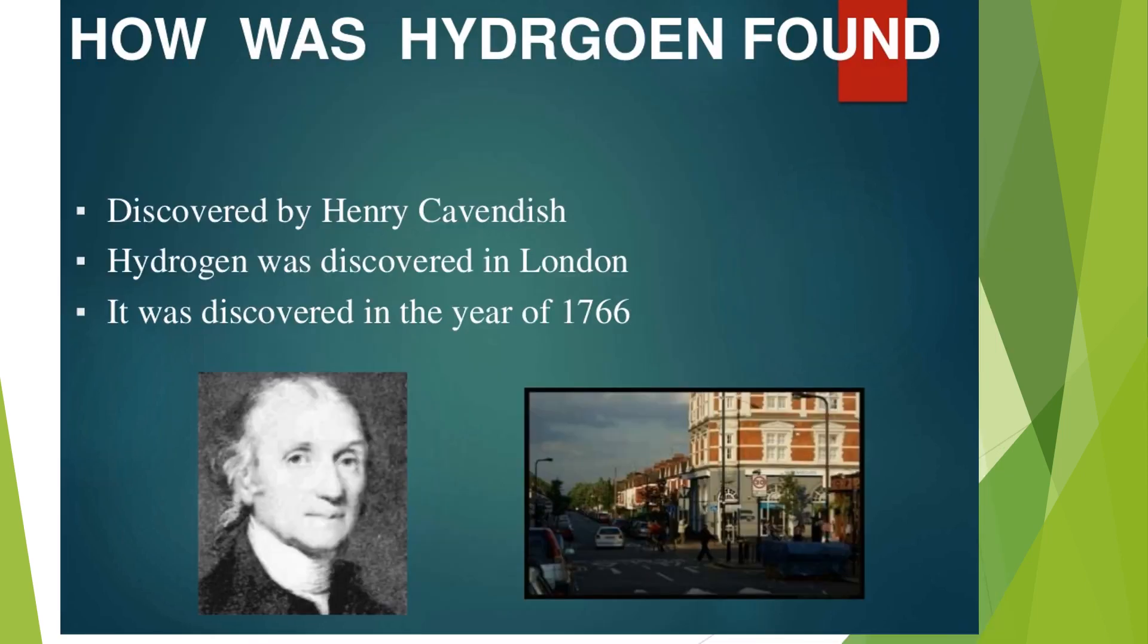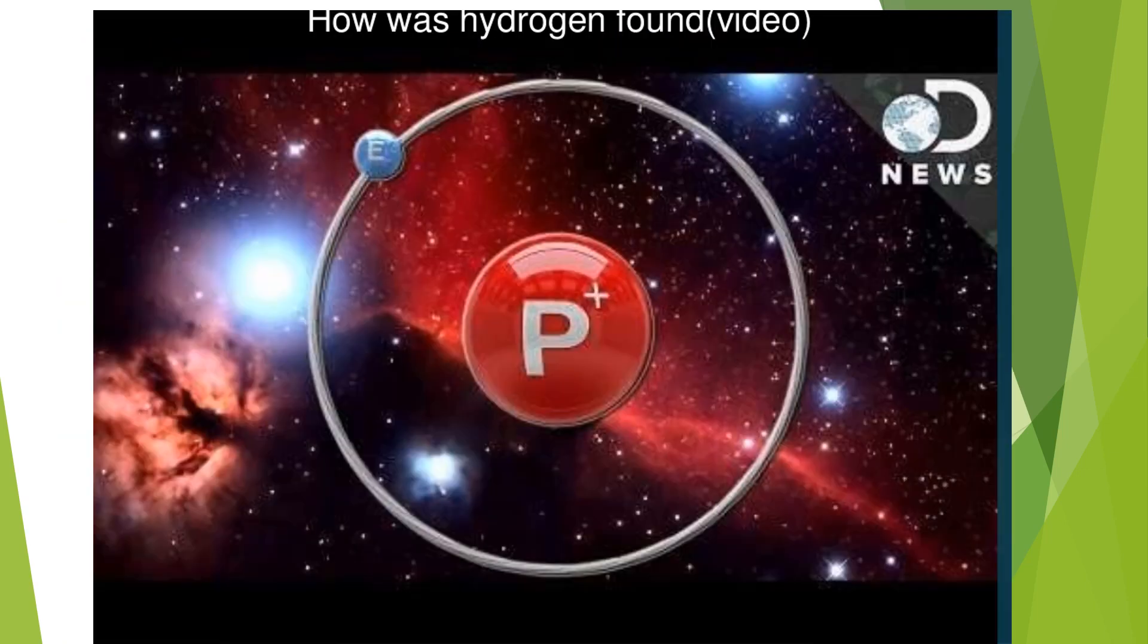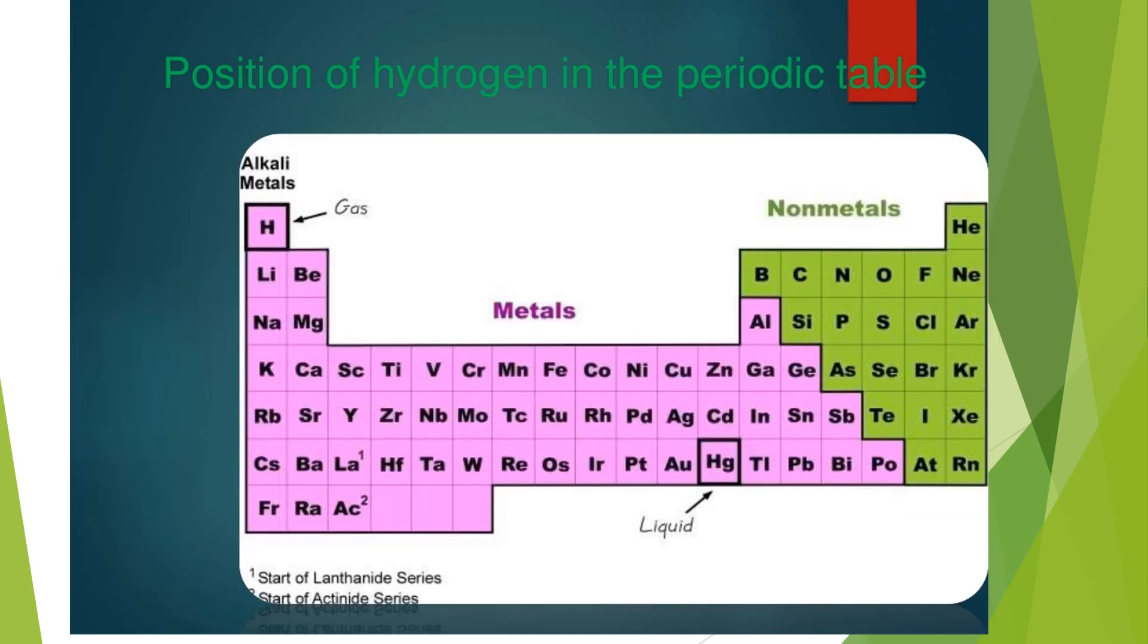It was discovered by Henry Cavendish in London in the year 1766. Position of hydrogen in the periodic table.